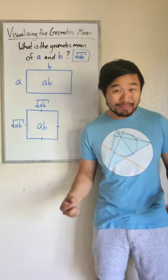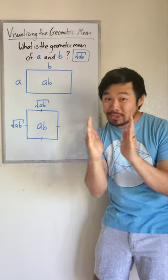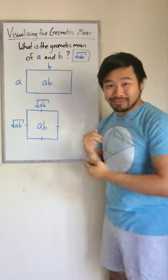So if we're calculating the geometric mean of two numbers, we keep the product, or the area, but we need to morph it into a square, and then calculate the side length of the square.